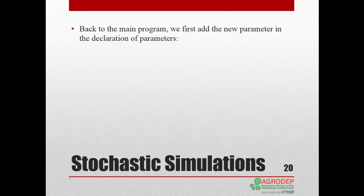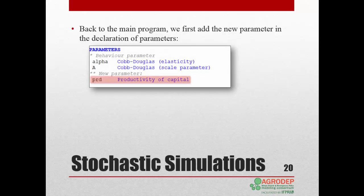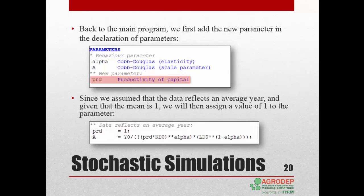In the main GAMS program from Lesson 8, we add the parameter prd to the declaration of parameters. This parameter has the same name as the one defined in the program draw.gms. And since we assumed that the data reflects an average year and that the distribution mean is 1, we assign a value of 1 to prd.